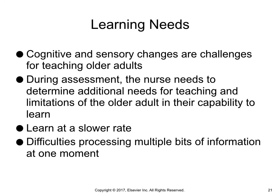Learning needs for the older adult. Cognitive and sensory changes are challenges for teaching older adults. As you assess the various physical, cognitive, functional, and psychosocial problems of older adults, it is important to also assess their associated learning needs. If a patient has slow responses or reaction time when performing physical activities, it will be necessary to consider these limitations when teaching new psychomotor skills. Older adults learn new information at a slower rate than younger adults due to a decline in fluid intelligence, which is defined as the reasoning and processing components of learning. In addition, an older adult has difficulty processing multiple bits of information at one moment. During your assessment, carefully consider a patient's learning needs and capability to learn.